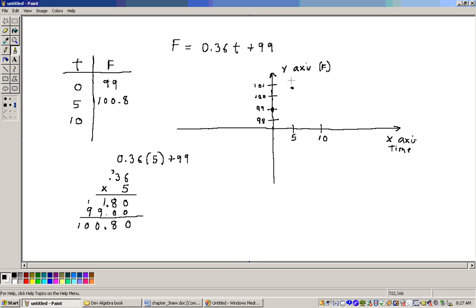Let's get one more point. We'll substitute the 10 in for t, and that would be 0.36 times 10. Well, that's just going to give us 3.6. Add on the 99, and you get 102.6. So, at 10, we're going to need to go a little higher. At 10, it will be up to 102.6. That's really up there pretty high.